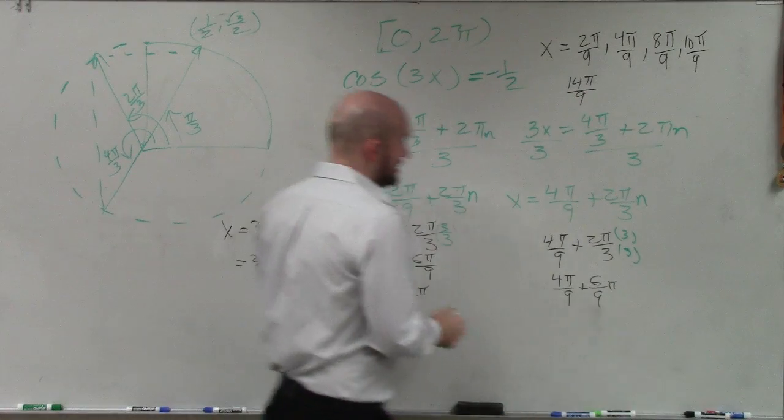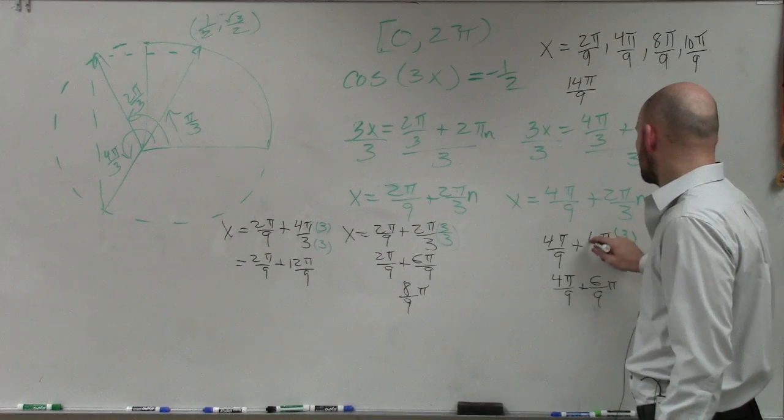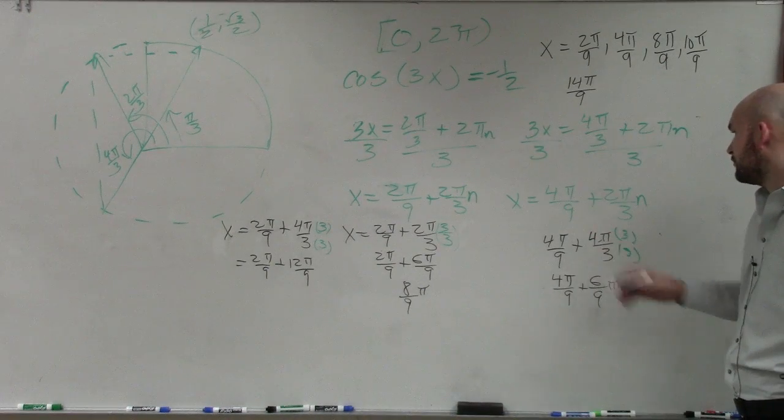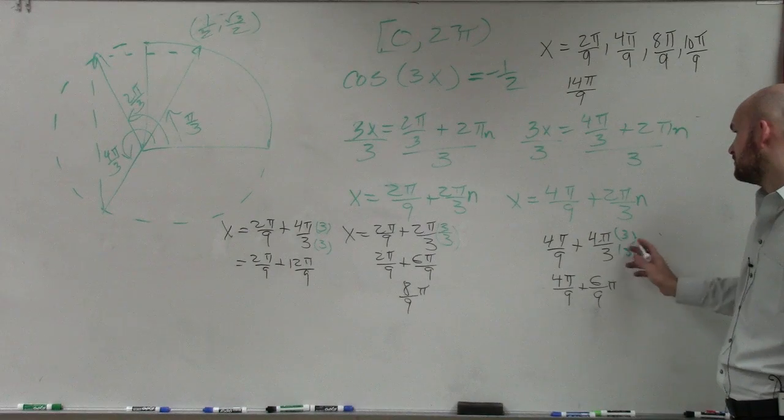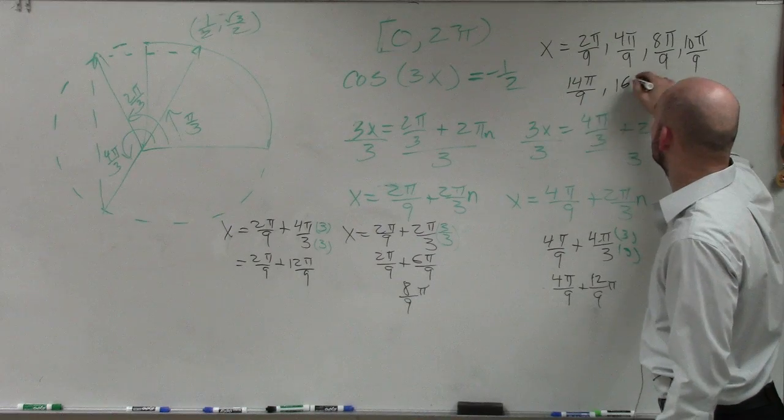And then we could do this one again. Let's change it. I'll just change it to 4π. So therefore, that becomes 12, which would be 16π over 9.